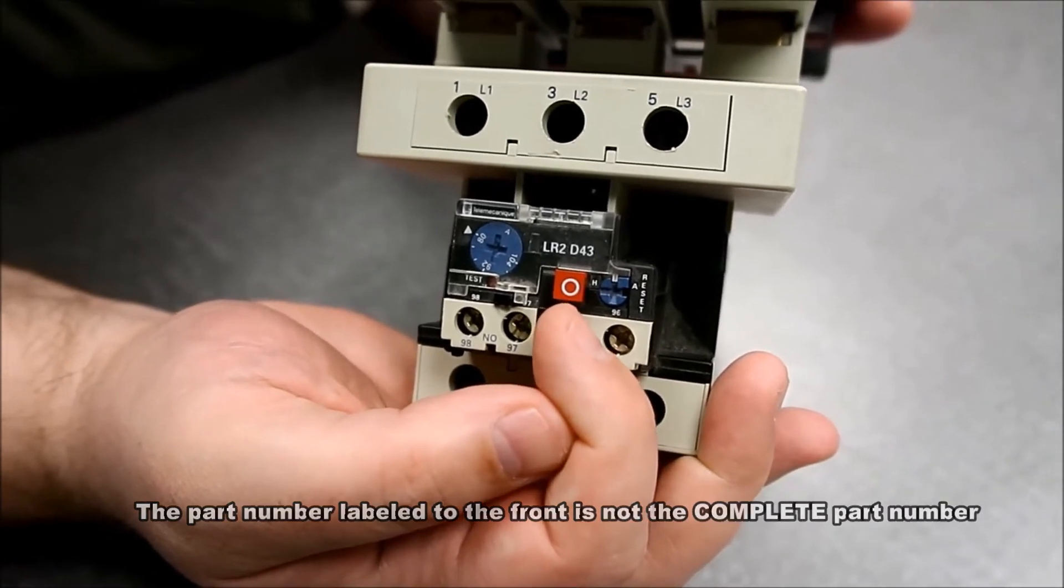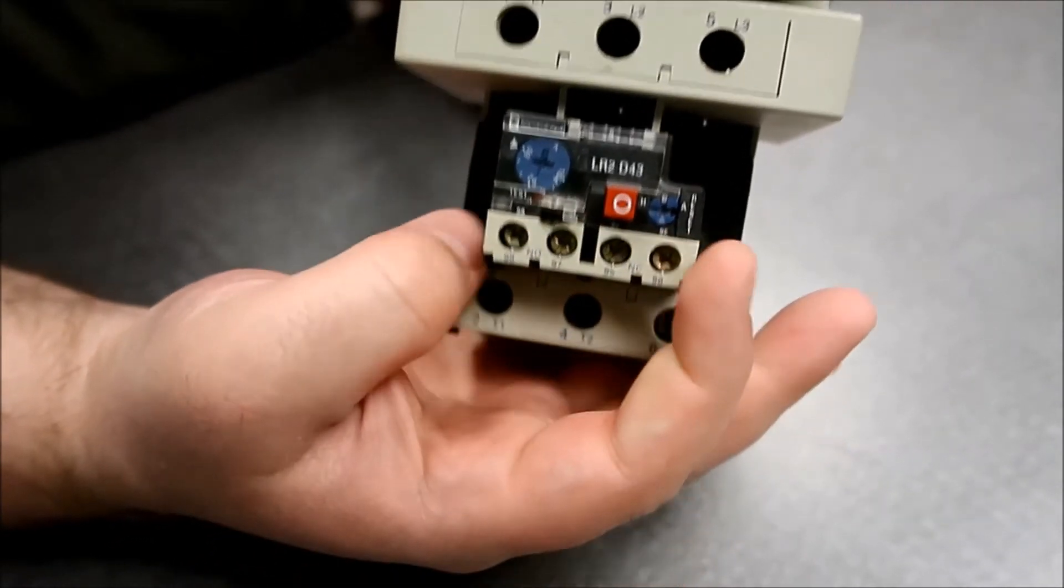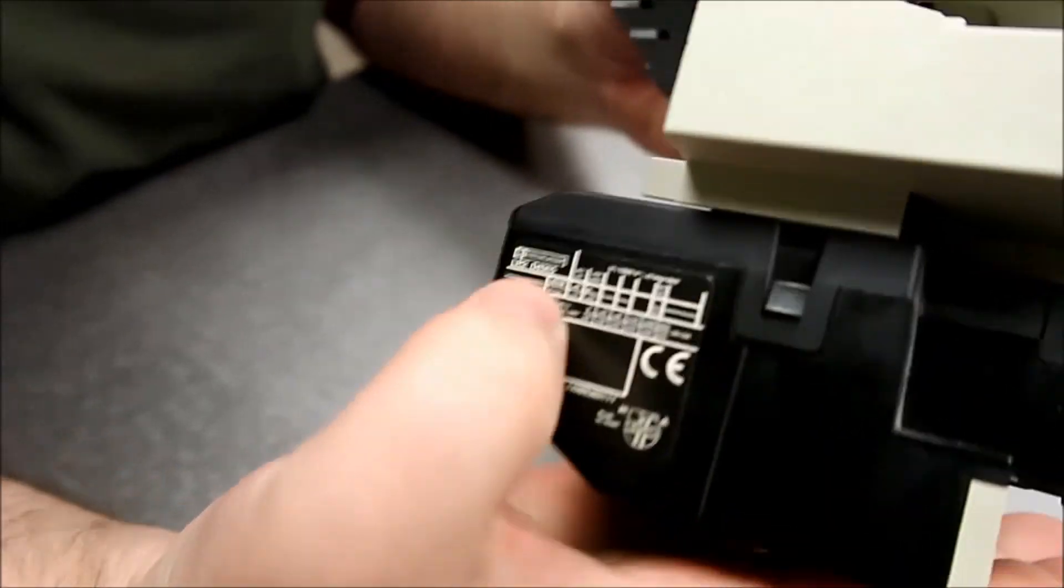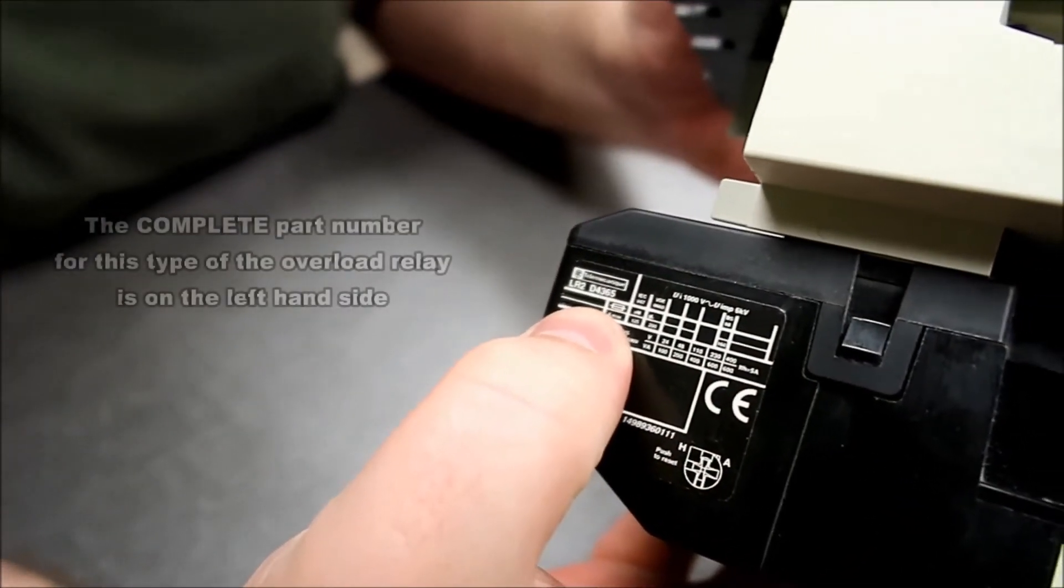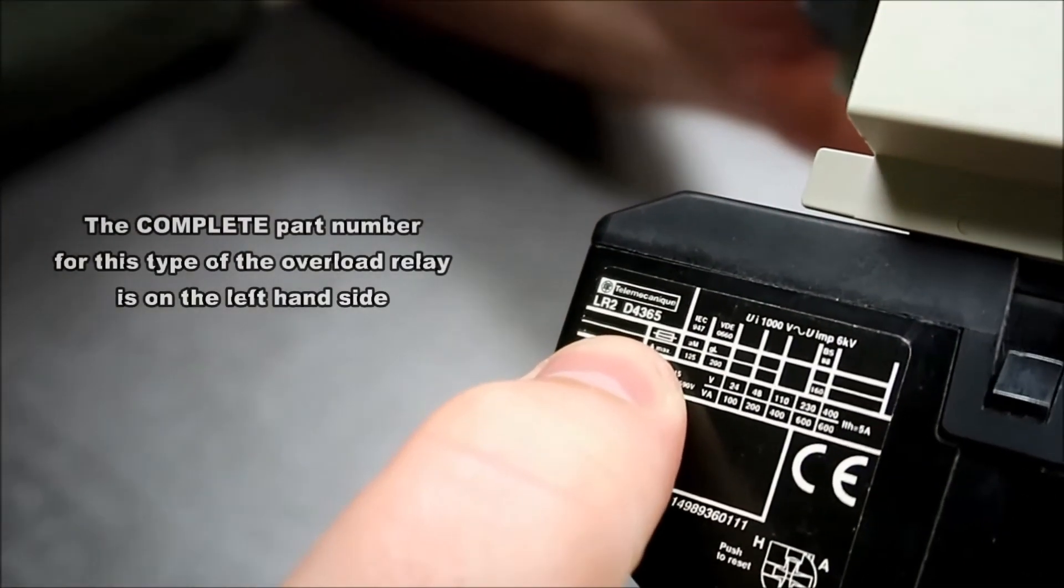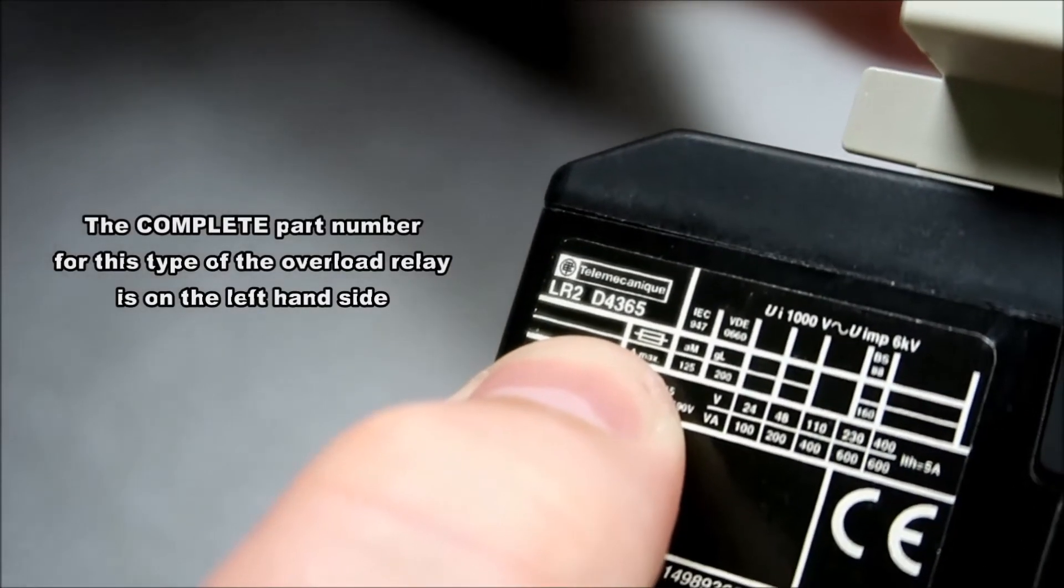That actually leaves off two digits that we need off the back of it. That's actually going to be located over here on the side sticker. So you got the LR2D4365. That's going to be the entire part number.